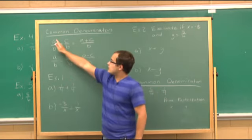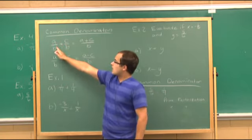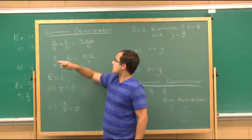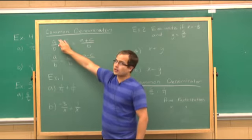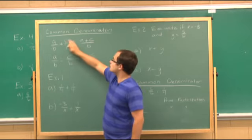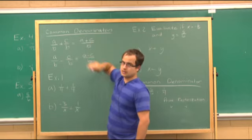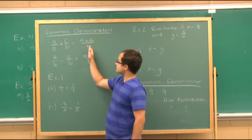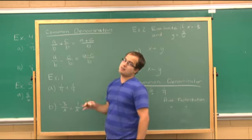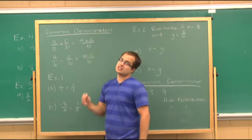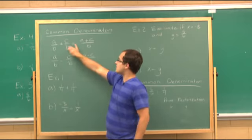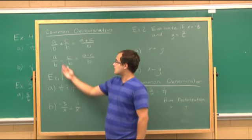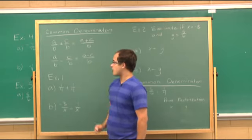How you do it is: when you have a/b plus c/b with the same denominators, all you do is add the numerators together — so (a + c) over b — and the denominator stays the same. You don't add the denominators together; it just stays the same. Same with subtraction.